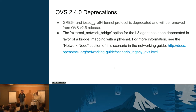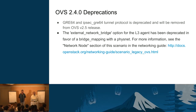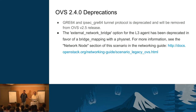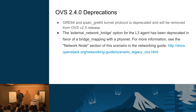The 2.4.0 release notes include some deprecations you need to be aware of, mostly for going beyond that. The GRE64 tunnel is deprecated and will be removed in 2.5, so be aware of that if you're using it. The external network bridge option for the L3 agent has been deprecated in favor of a bridge mapping.